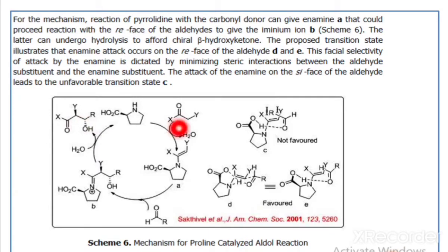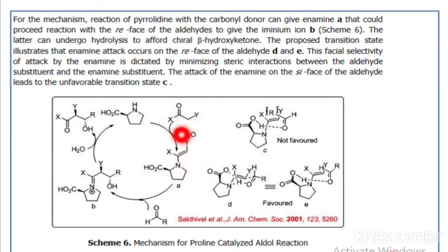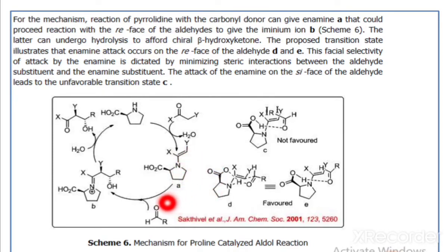In the detailed mechanism: the nitrogen's lone pair attacks the carbonyl, which becomes OH. Removal of the water molecule gives the enamine. Then, the enamine on treatment with the aldehyde — the nitrogen lone pair shifts, and the double bond attacks the aldehyde. We get the B-intermediate (iminium ion). The iminium ion undergoes hydrolysis, and we get the beta-hydroxy ketone.